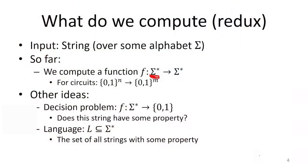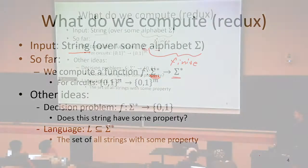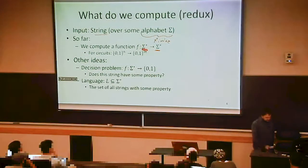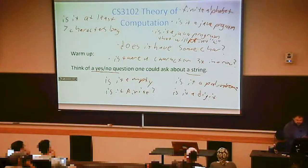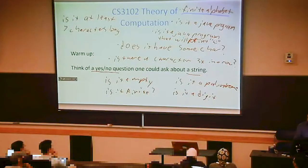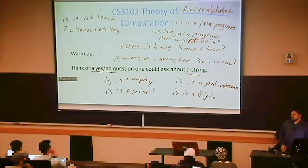So we said that the things we computed was going to be some function that took a string as input and produced a string as output. The strings are going to be some sequence of characters. Those characters are drawn from some alphabet, and this alphabet is always going to be finite. There's always a finite number of things in our alphabet — somebody asked this on the previous slide, and the answer is always yes.